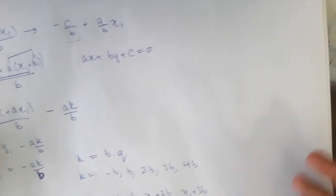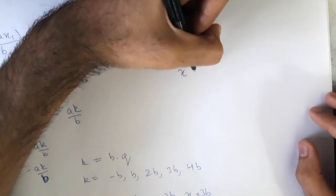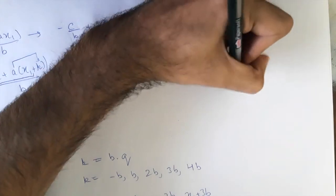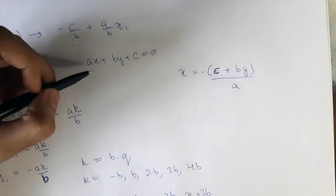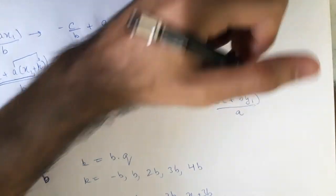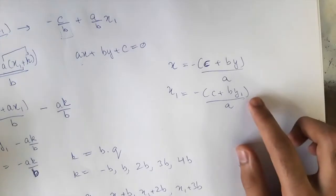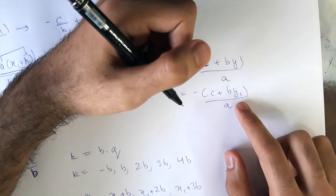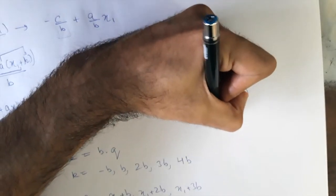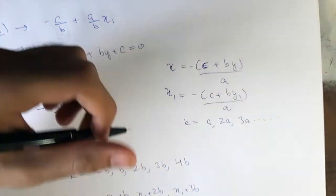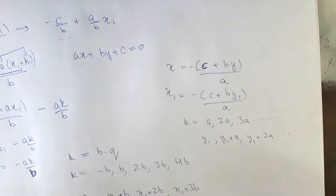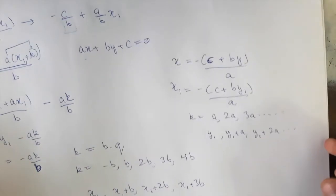We can do the same for x: x = -(c + b·y) / a. If we increment y₁ by k and repeat all the steps, we find that k must be a multiple of a. So the y-values form the sequence y₁, y₁+a, y₁+2a — also an arithmetic progression, this time with common difference a.